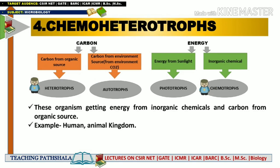The last category is chemo-heterotrophs, combining the concepts of chemotrophs and heterotrophs. Chemo-heterotrophs are those microorganisms which get their energy from inorganic chemicals and fulfill their carbon need with the help of organic sources. The best examples include humans and the animal kingdom.